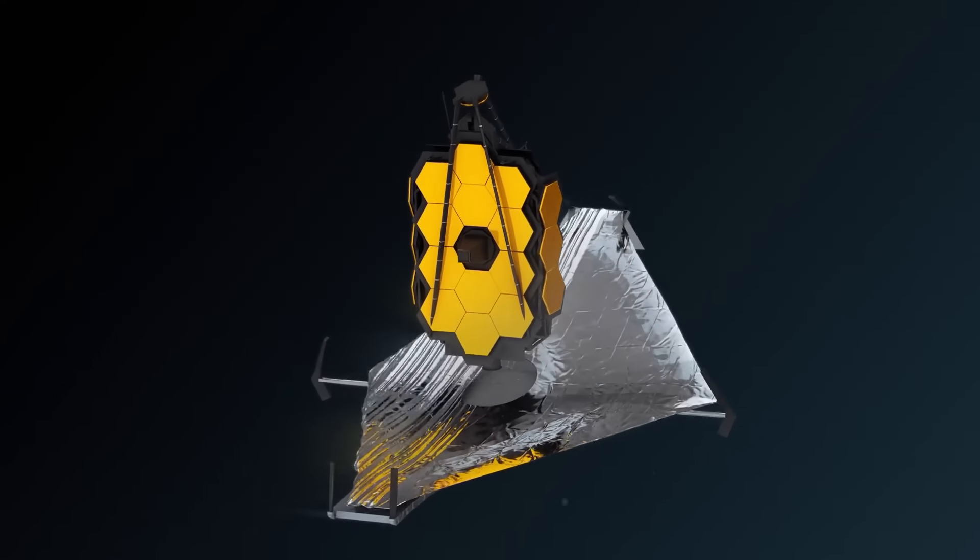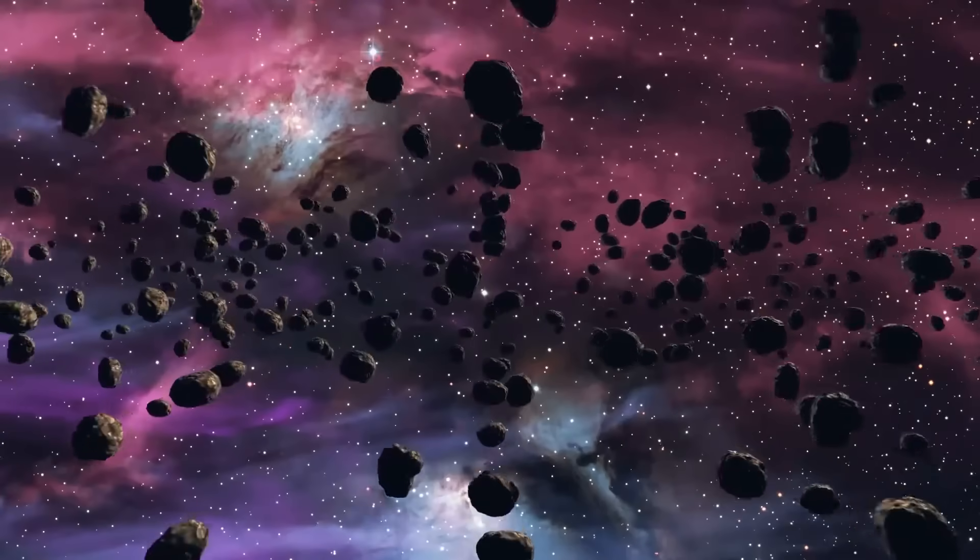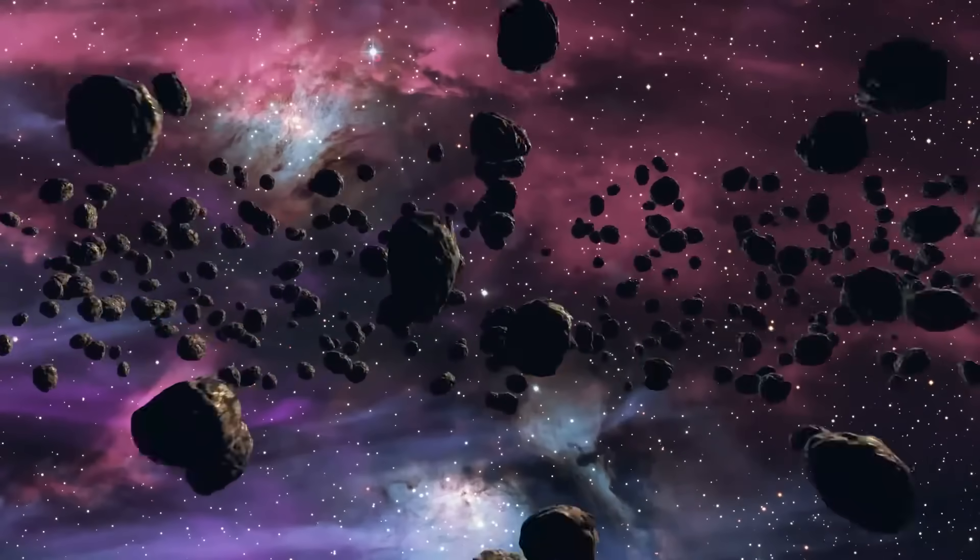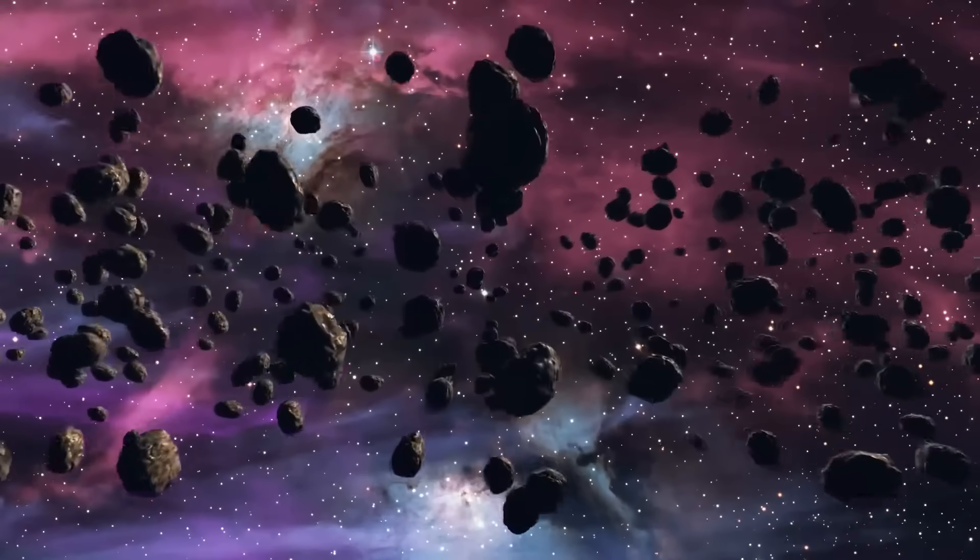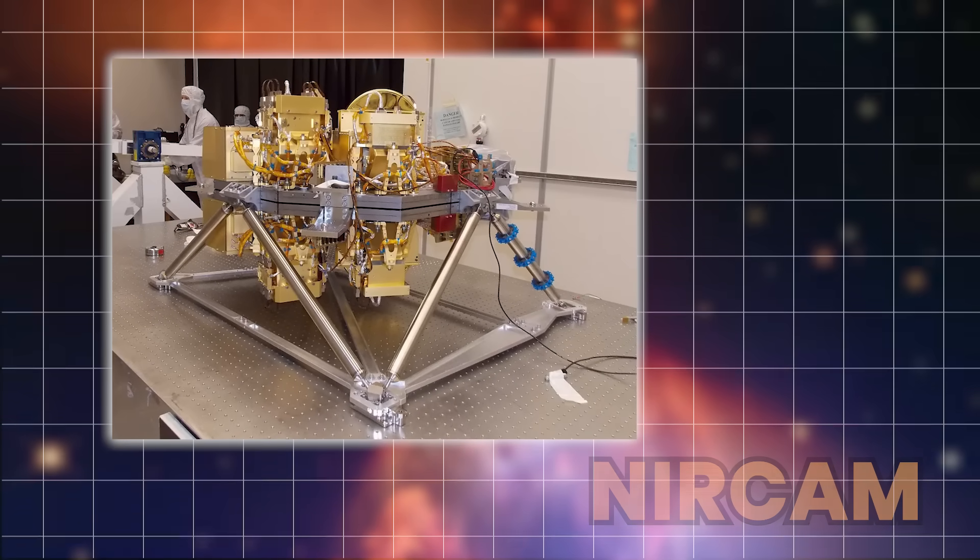The James Webb Space Telescope, stationed nearly a million miles from Earth at the second Lagrange point, was scanning a segment of the asteroid belt as part of a broader mission to study the early solar system's composition. During routine imaging, Webb's near-infrared camera, NIRCAM, picked up a faint but highly unusual object.